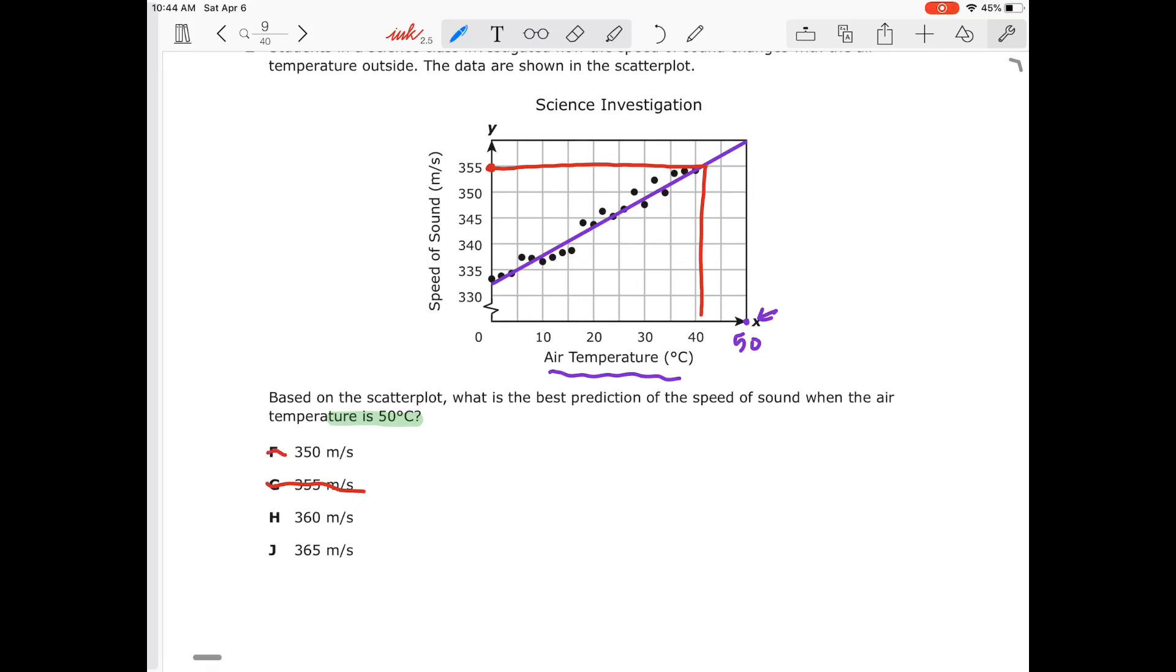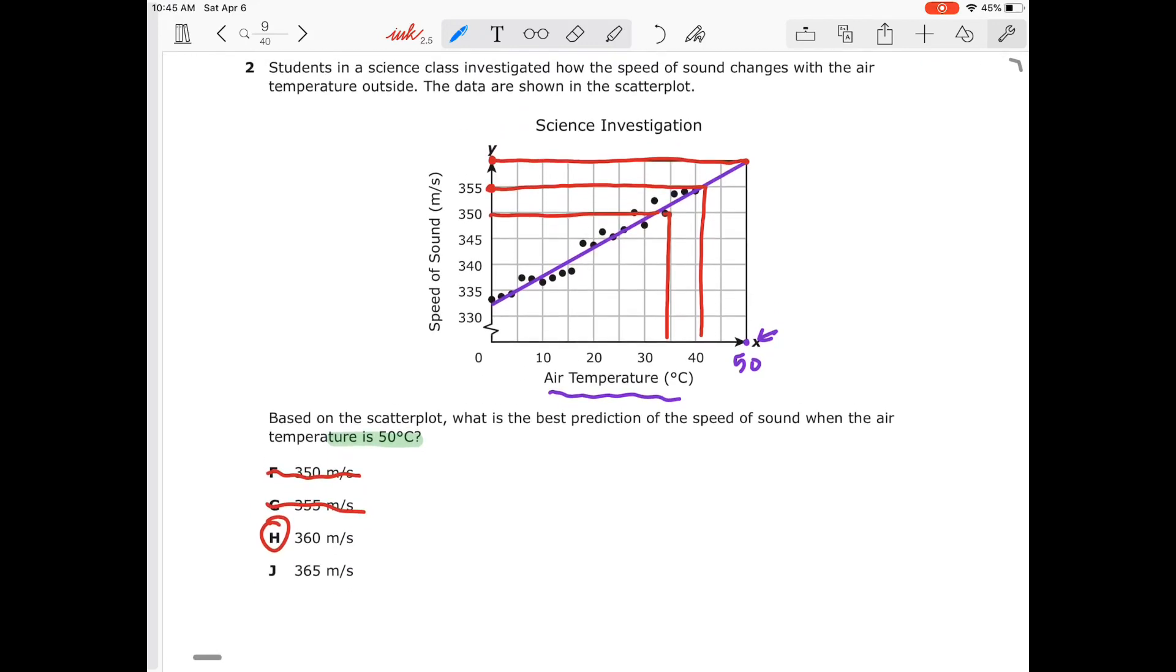And we also know it won't be 350 because for the same reason, we talk about 350, that's going to give us a temperature of 35 degrees. So we're really looking at somewhere in the 50 range. If I have my point there and I go over here to the left and go to my Y value, my Y value there is 360, so that is my answer choice H, which if you think about that, that is our correct answer.